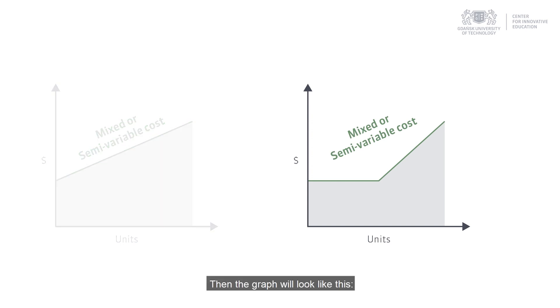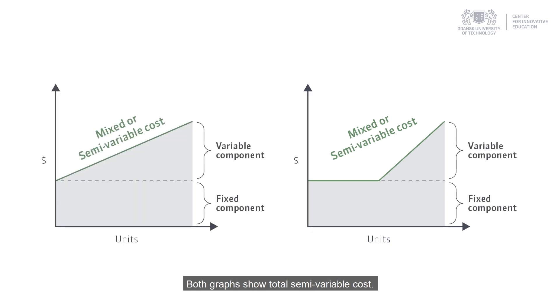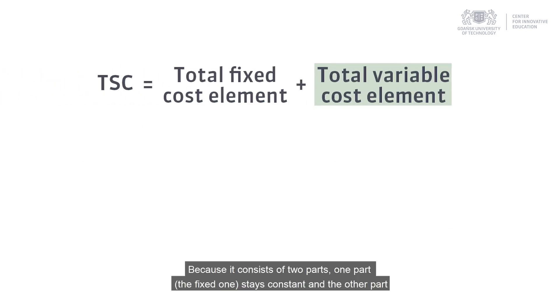Then the graph will look like this. Both graphs show total semi-variable cost. If you want to check what its value consists of, the graph would look like this, because they consist of two parts.